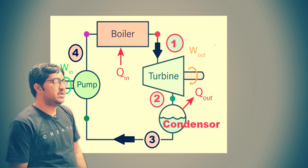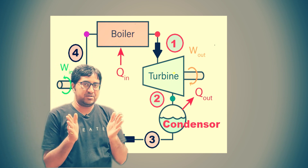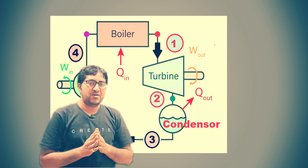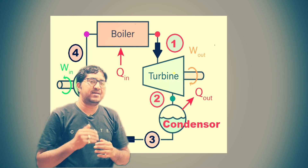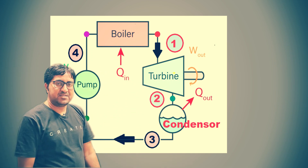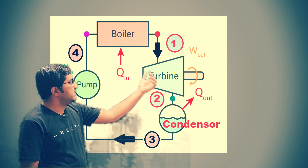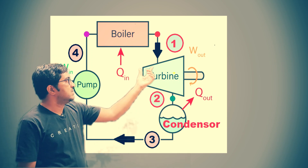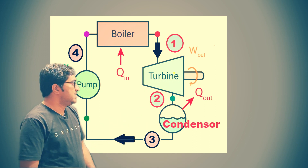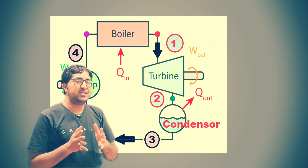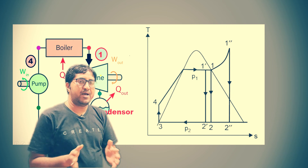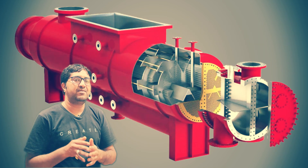Another advantage involves the boiler: when there is a large temperature difference in the boiler, thermal stress is produced — thermal stress is a function of temperature difference. By supplying condensate at a higher temperature, the temperature difference is reduced, so thermal stress in the boiler decreases and the life of the boiler increases. These are the key advantages of the condenser in a thermal power plant.